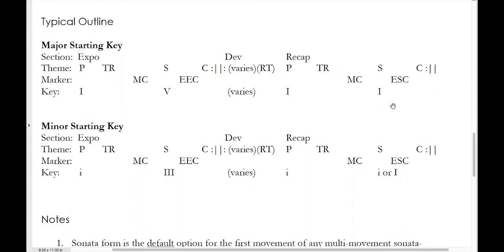There are a few ways this transposition can be accomplished. The simplest solution is just to block transpose the secondary and closing themes so that they appear in tonic. More often, there'll be some slight adjustments in texture, register, orchestration, or range. More substantial edits are also possible. The medial caesura in the recapitulation will end in tonic. If the exposition had a transition that modulated and ended with a half cadence in the dominant, the transition in the recap will often be modified — shorter, longer, or the same length — but the tonal plan will be modified so that it ends with a half cadence in tonic rather than in dominant.